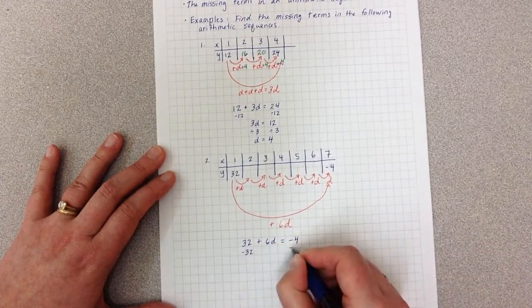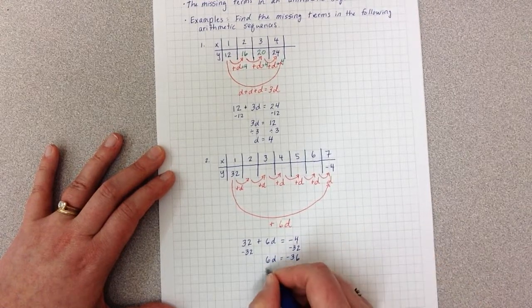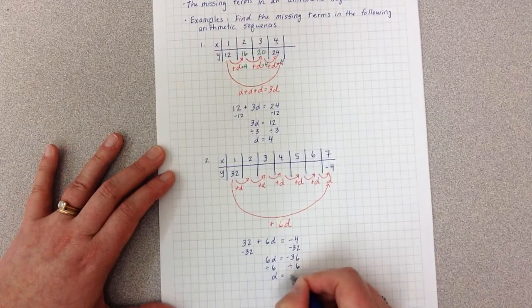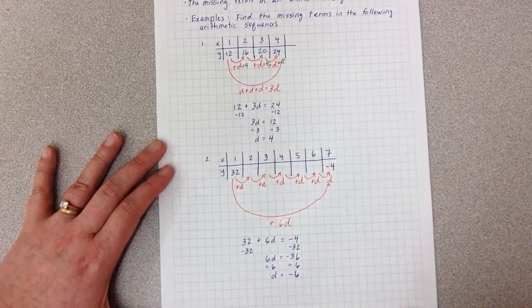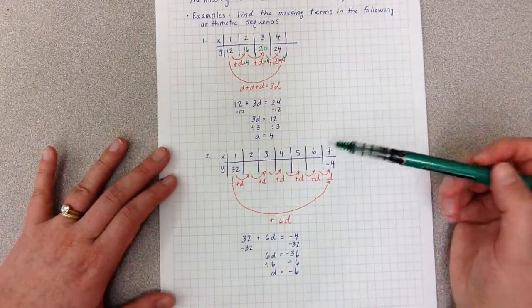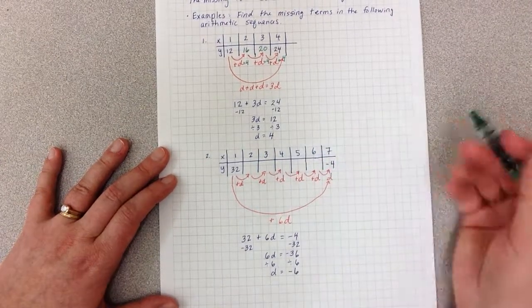Solving this, subtract 32 on both sides, then divide by 6. In this case, D is a negative number, which is absolutely fine. It just means that to go from one term to the next, I'm adding a negative number, so I'm getting smaller.